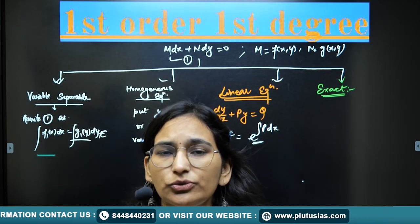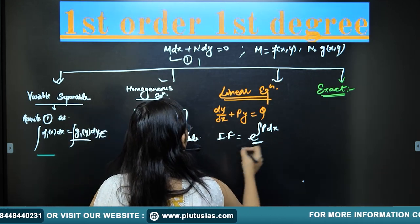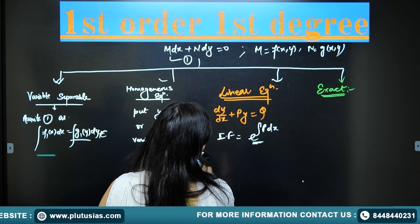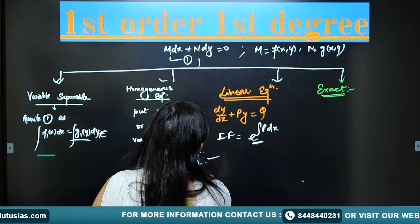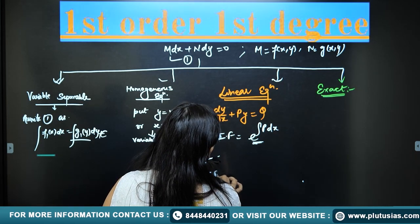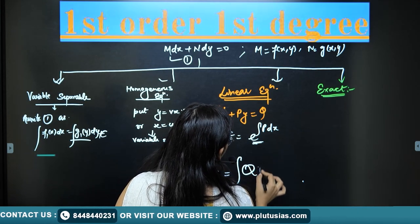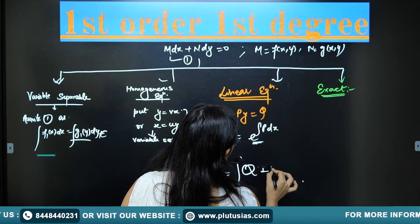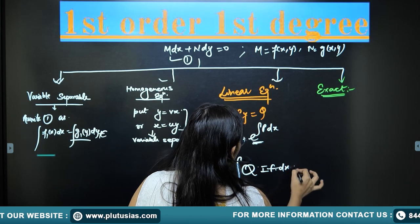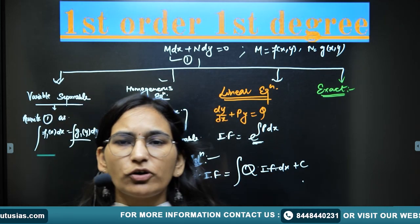After finding the integrating factor, write the solution as: y multiplied by the integrating factor equals the integral of Q multiplied by the integrating factor dx, plus c. That is the final solution for the linear equation.